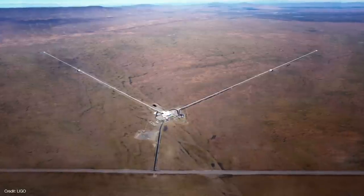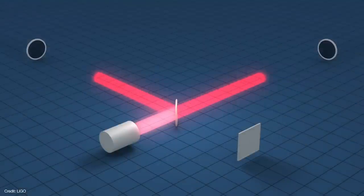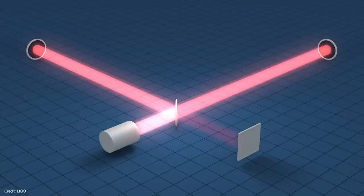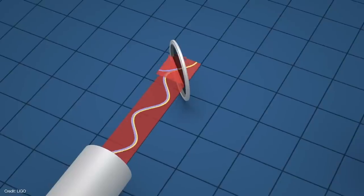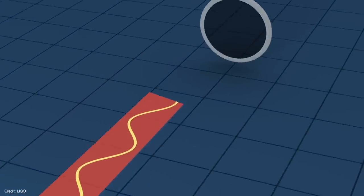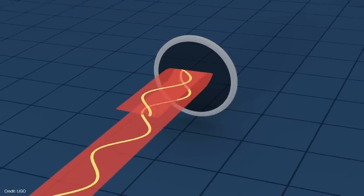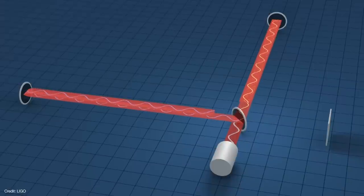LIGO, which is short for Laser Interferometer Gravitational Wave Observatory, detects gravitational waves with a laser interferometer. A laser is sent through a beam splitter down an L-shaped pair of tubes four kilometers on each side. At the end of the tubes are mirrors that reflect light back to the splitter.